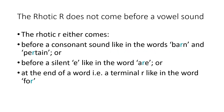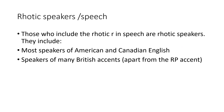A rhotic R is an R sound that does not come before a vowel sound. It either comes before a consonant sound, like in the word 'barn' or 'pertain', or before a silent E, like in the word 'are', or at the end of a word as a terminal R, like in the word 'for'. Those who include the rhotic R in words are rhotic speakers and have rhotic speech. Speakers of American English are mostly rhotic, as are speakers of Canadian English and many British accents, apart from the RP accent.